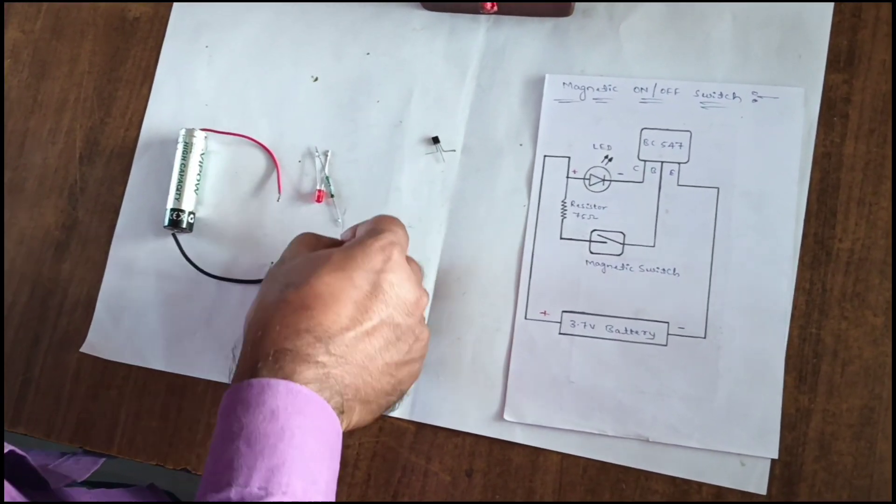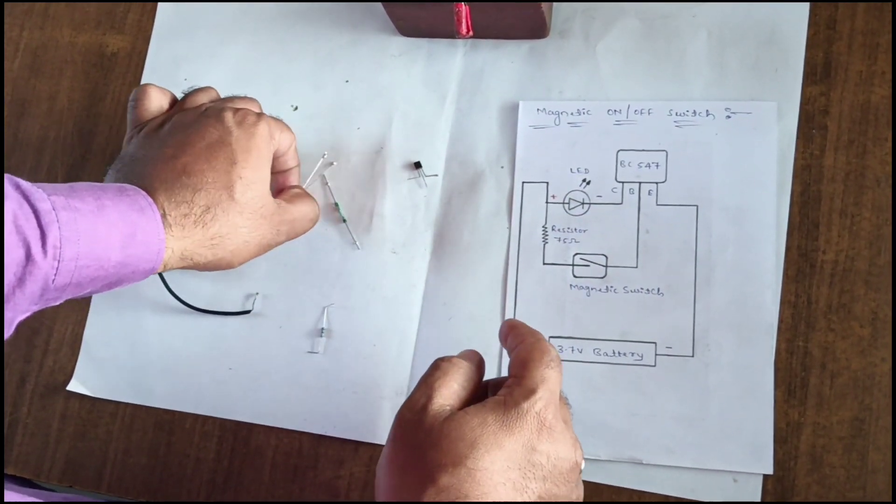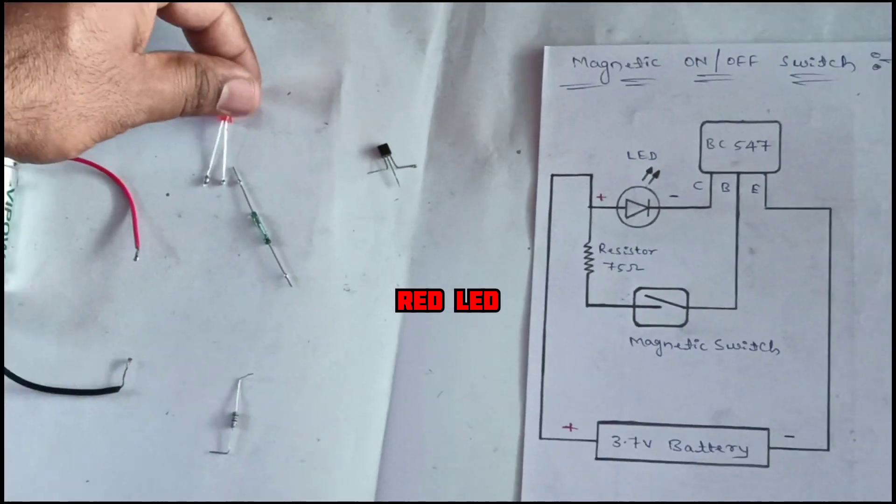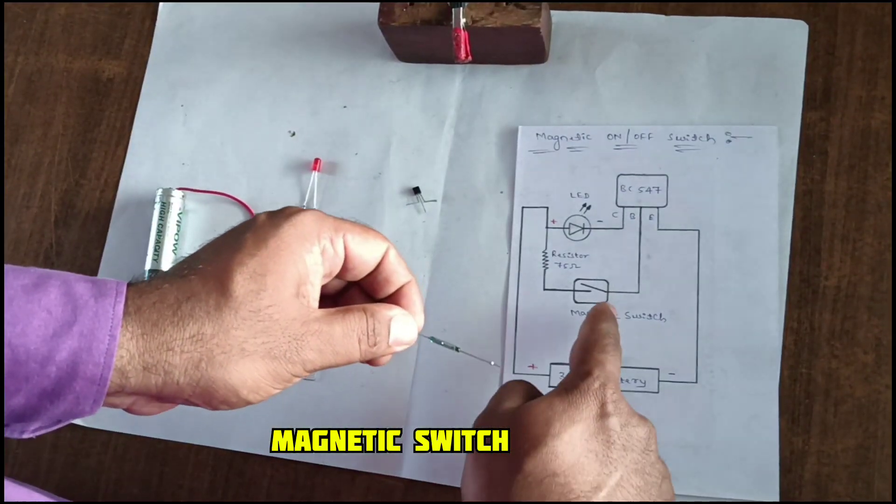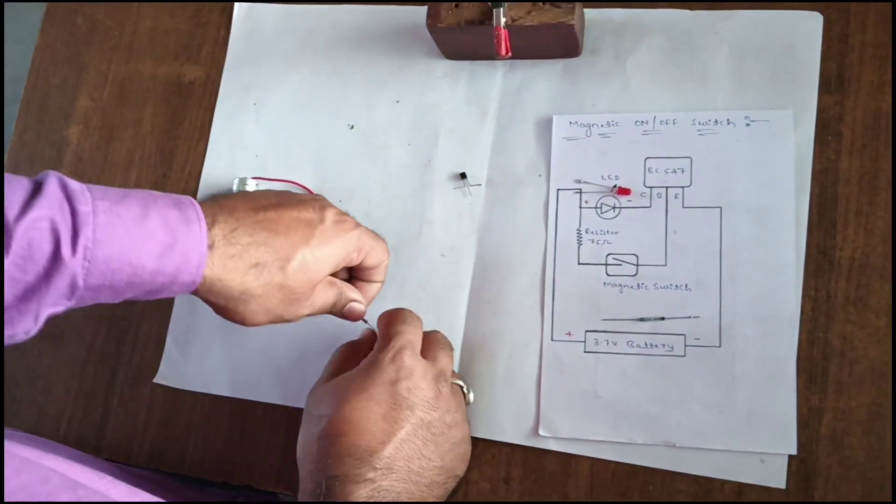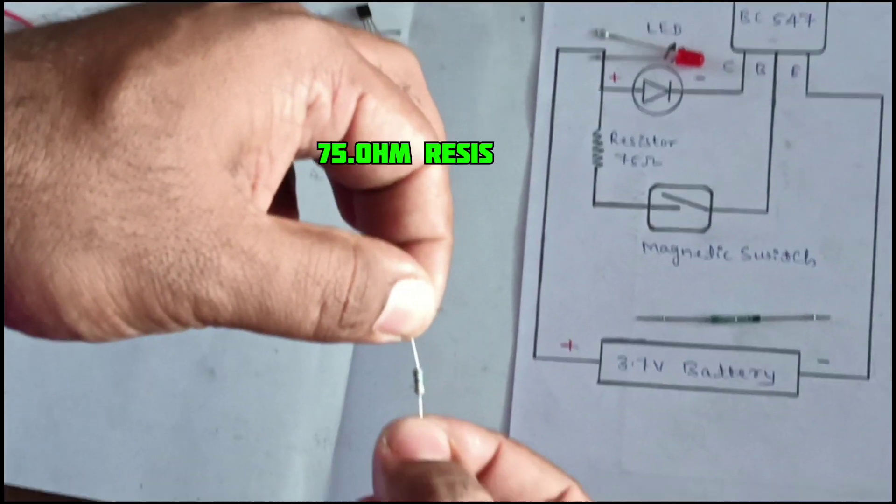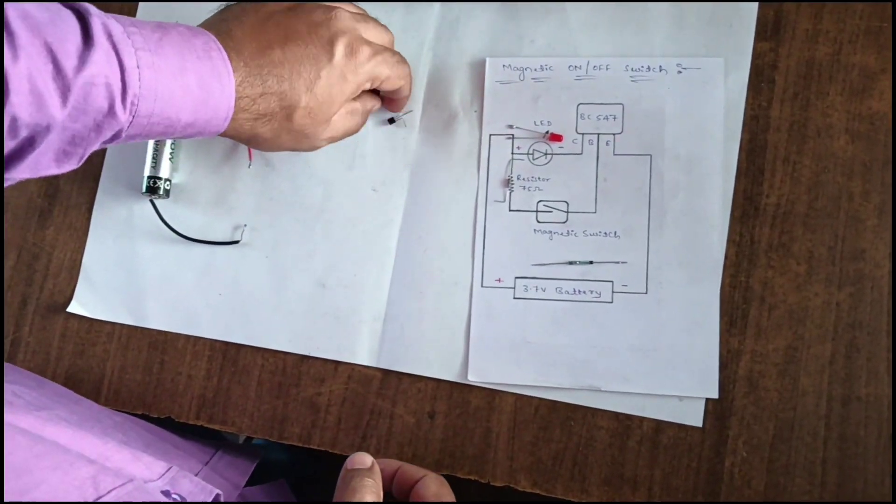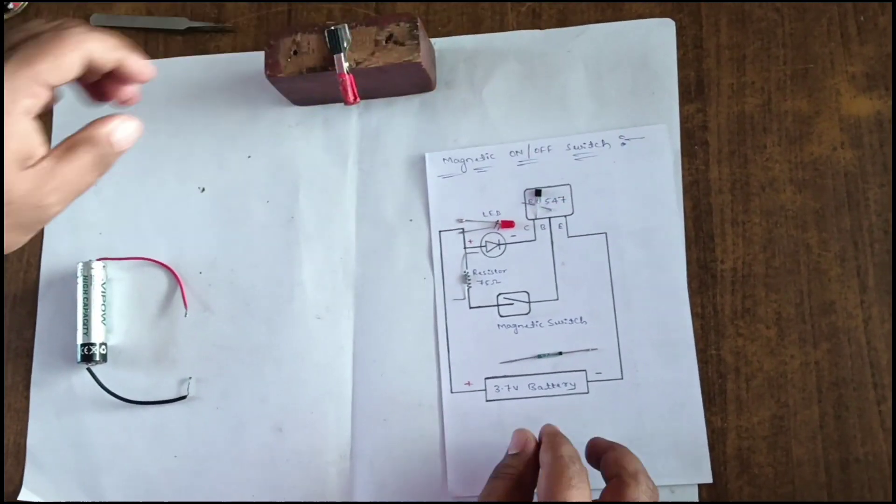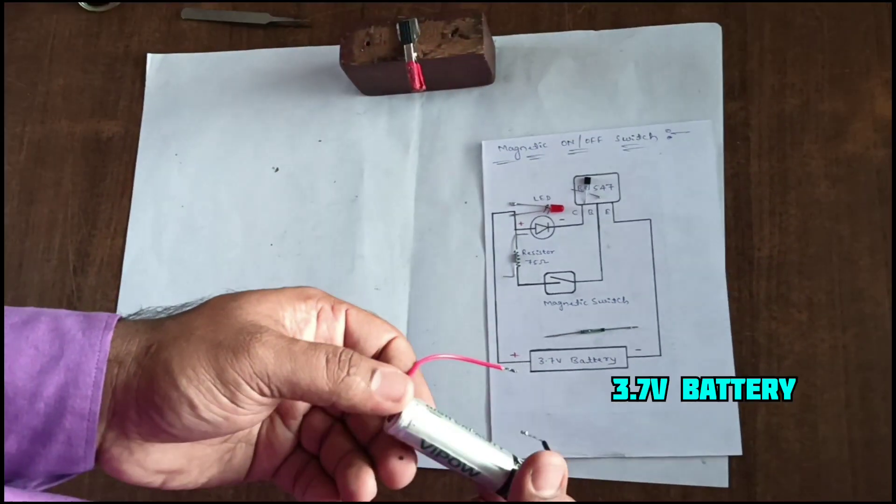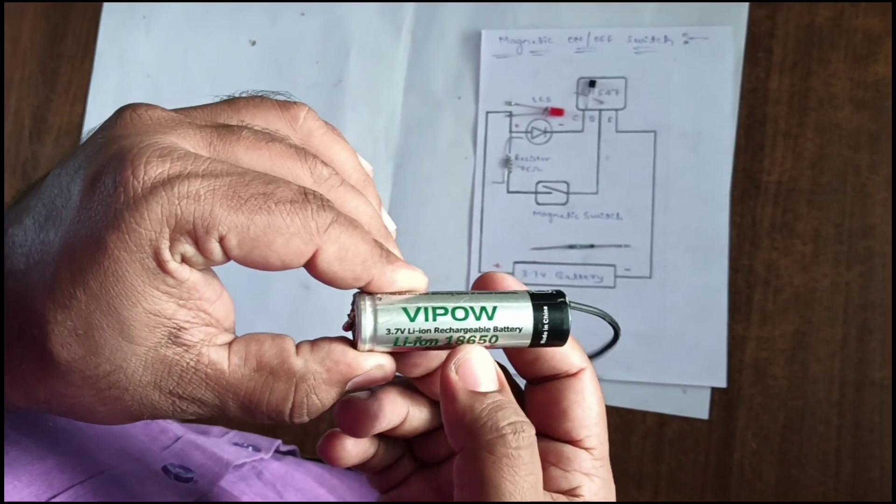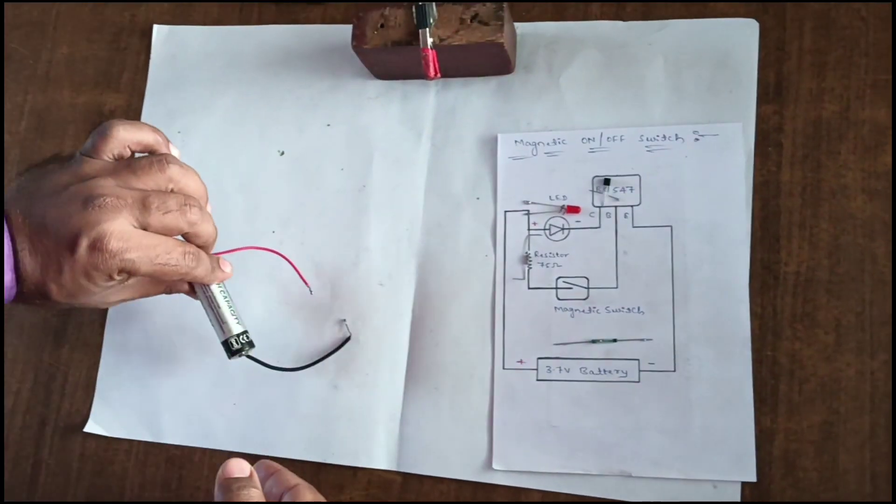an LED. In this we use a red color LED. Next, this is the magnetic reed switch. Next is the 75 ohm resistor. And finally we use a 3.7 volt lithium rechargeable battery. Let's start the connection.